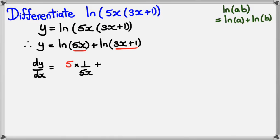Plus, I differentiate whatever's inside this bracket here, which is 3x plus 1. So if I differentiate it, I would get 3. And that's multiplied by 1 over 3x plus 1.